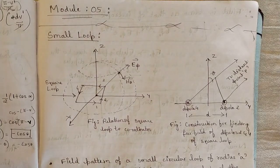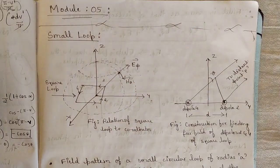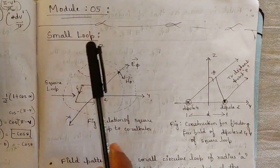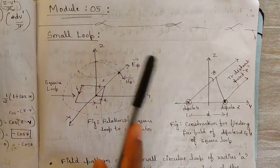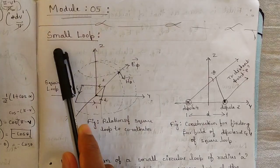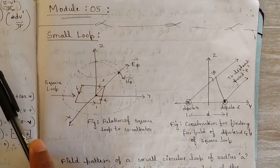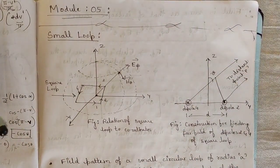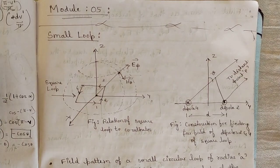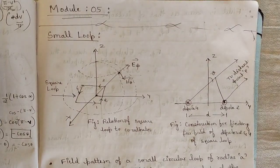There are mainly 3 to 4 important kinds of antenna in this module. Starting from small loop antenna, which we are going to see in this video, then radiation resistance of this antenna, then horn antenna, then Yagi-Uda antenna, and then microstrip antenna. These are the important antennas we are going to discuss, and I am going to finish this module in around 5 to 6 videos. It is a very easy and simple module.